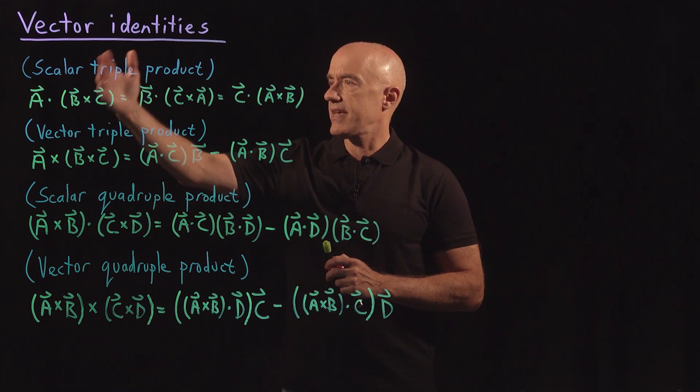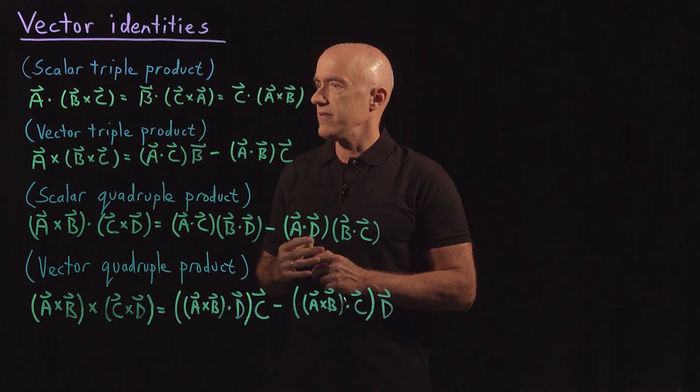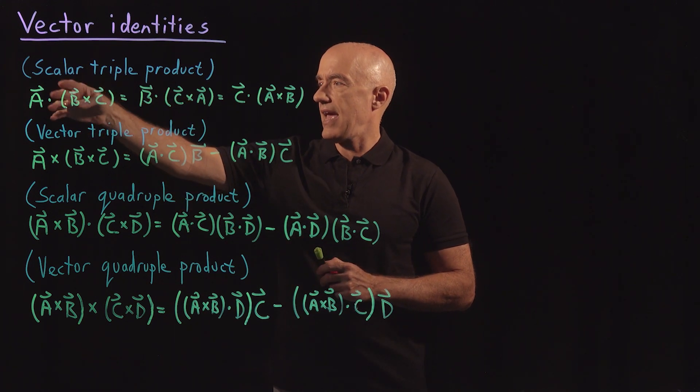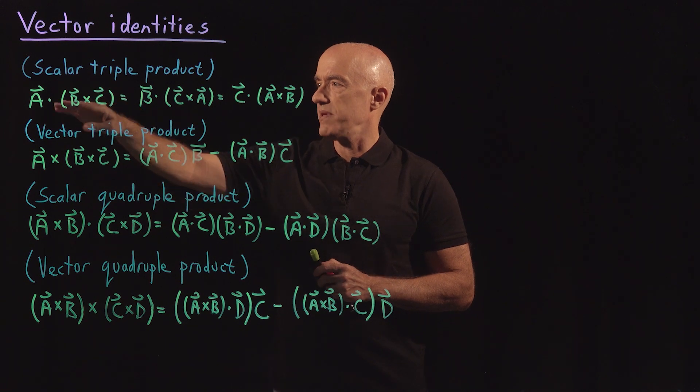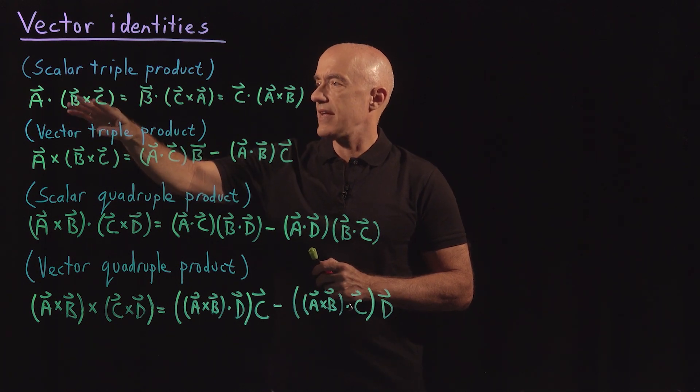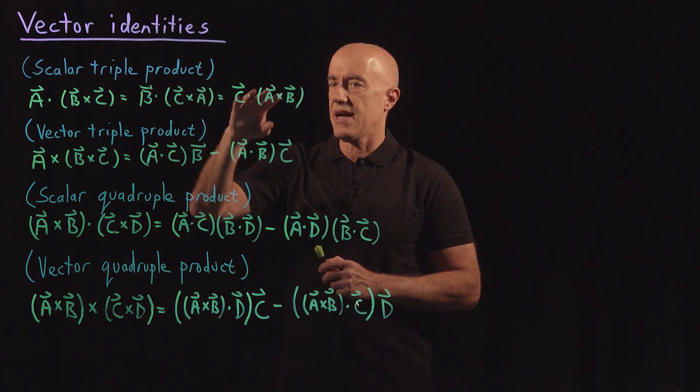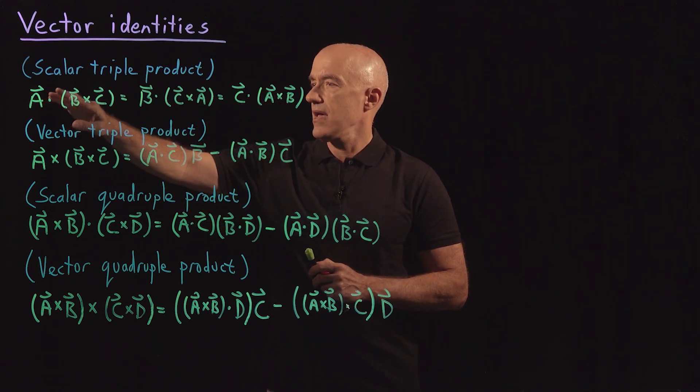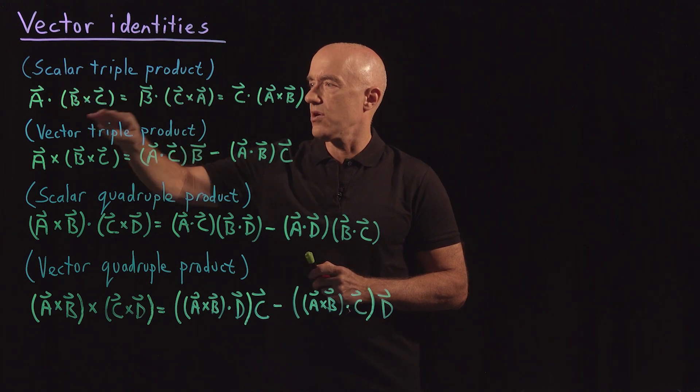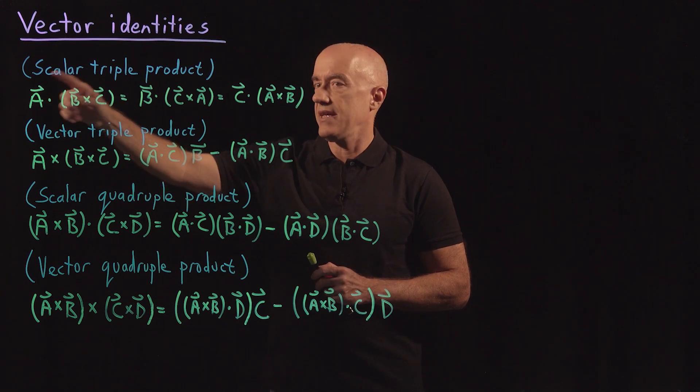Let's go through them. The scalar triple product is a scalar vector identity. It says that A dot (B cross C). So B cross C is a vector and A is a vector. So A dot (B cross C) is a scalar. That's equal to B dot (C cross A) is equal to C dot (A cross B). So the equality is basically a cyclical rotation of A, B, C. So A, B, C, B, C, A, C, A, B.